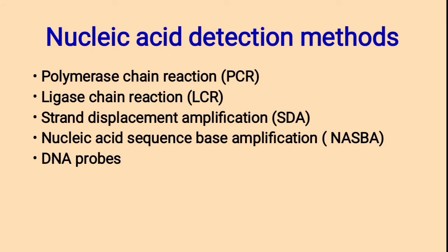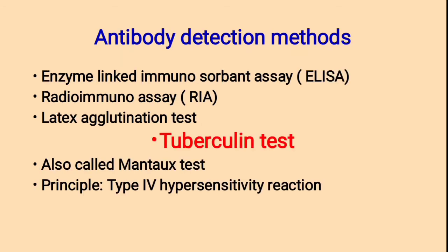Nucleic acid detection methods for Mycobacterium tuberculosis: polymerase chain reaction (PCR); ligation reaction; strand displacement amplification (SDA); nucleic acid sequence-based amplification (NASBA); and DNA probes techniques. Antibody detection methods include ELISA (enzyme-linked immunosorbent assay), RIA (radioimmunoassay), and latex agglutination test.